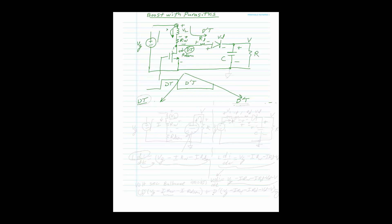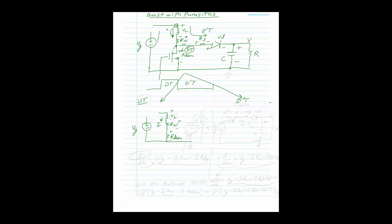For the DT interval, we can draw the circuit: V_G, the inductor, the winding resistance R_W, and the R_DS(on). The current I flows into the inductor with plus-minus polarity across each element.